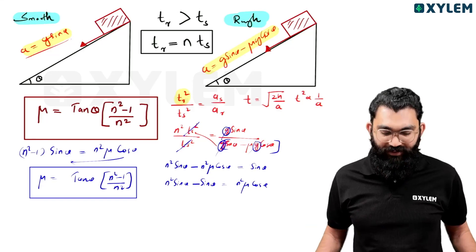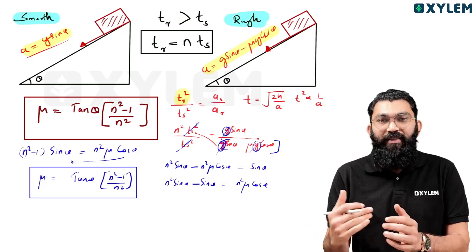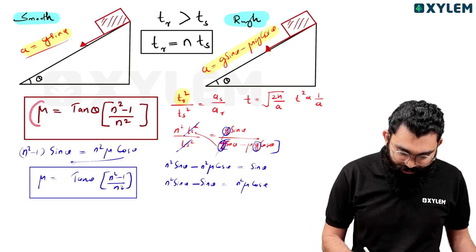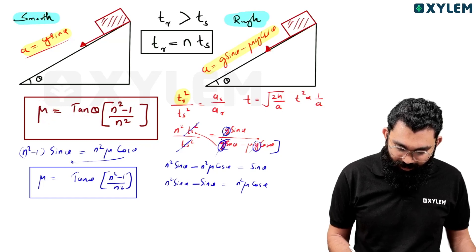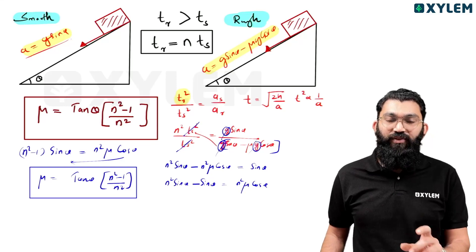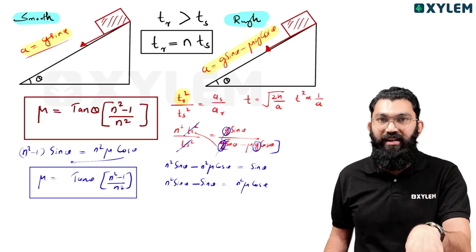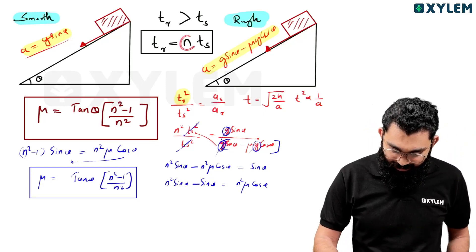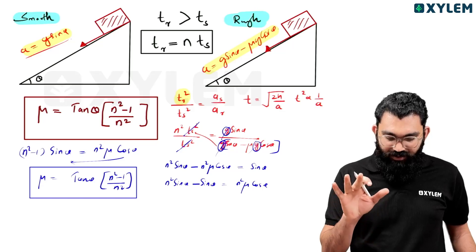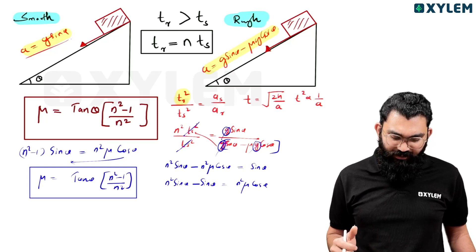So this is the equation for coefficient of friction in this situation — one smooth and one rough inclined surface, same angle and height. If you learn this equation by heart, you can get these questions solved directly. The formula is: μ equals tan θ times (n² minus 1) divided by n², where n is the time ratio.